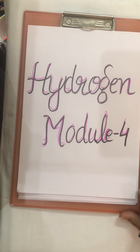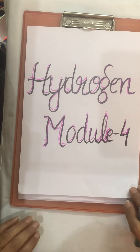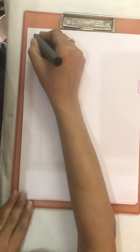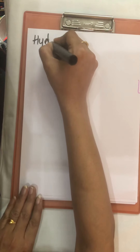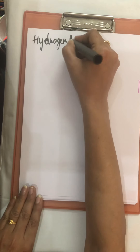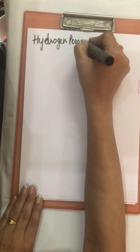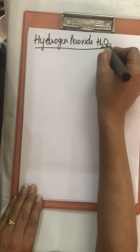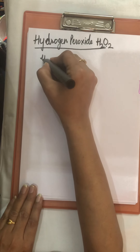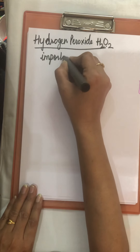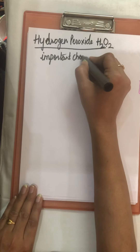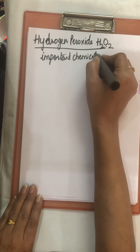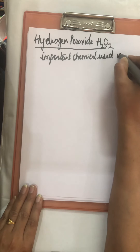Today we have our last lecture of the hydrogen chapter in Class 11th. We are starting with the topic hydrogen peroxide. Its formula is H₂O₂. It is an important chemical in pollution control for domestic as well as industrial use.